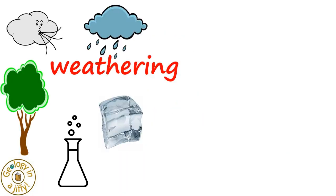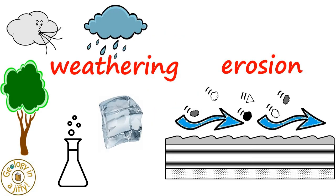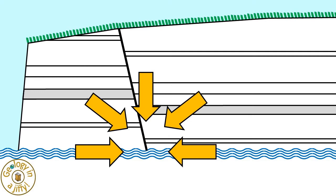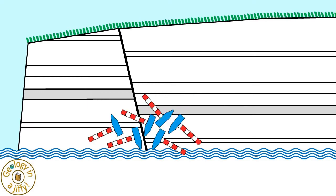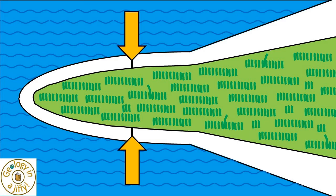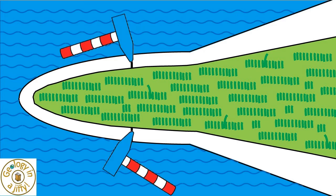Over time, the processes of weathering and erosion attack the cliff face, especially the erosive power of the sea and waves, attacking the area where the weaker rocks in the fault zone meet the sea. The sea acts like many geological hammers, continually attacking and breaking the cliff face. Viewed from above, where the fault meets the sea is where the erosive hammers focus their attack.